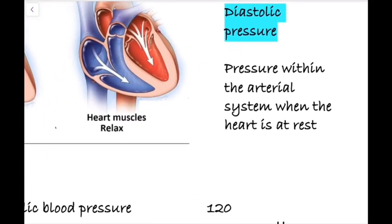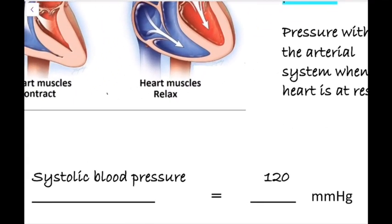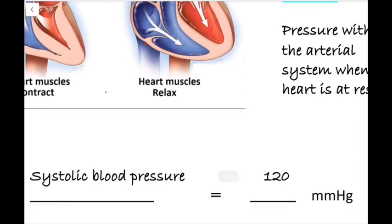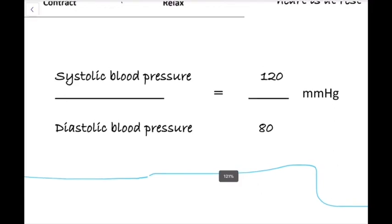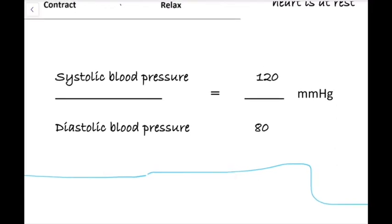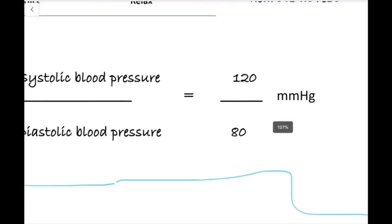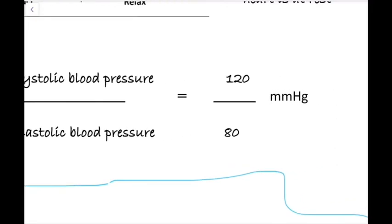Blood pressure is measured using an equipment called a sphygmomanometer. A normal person's blood pressure is expressed as 120 by 80 millimeters of mercury.